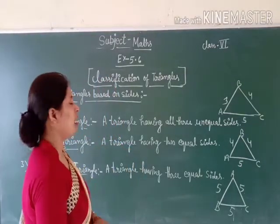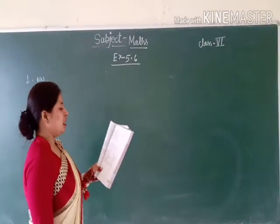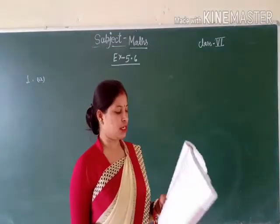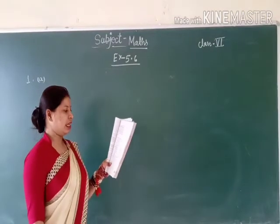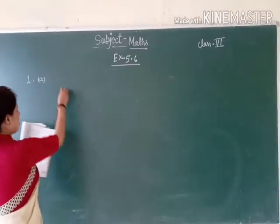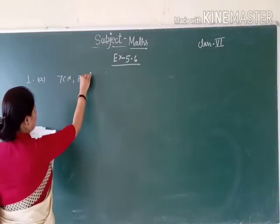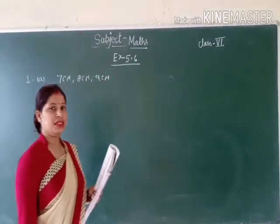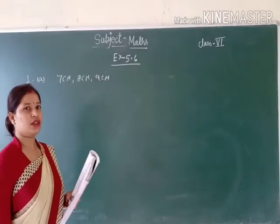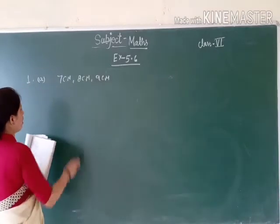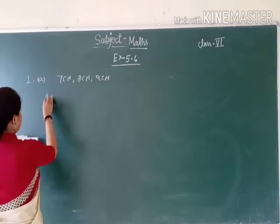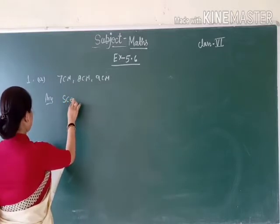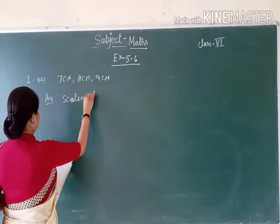So now let's start the exercise. First question: name the type of the following triangles based on their sides. First question — a triangle with side lengths 7 cm, 8 cm, and 9 cm. The three sides are different, meaning unequal sides. When all sides are unequal, which triangle is it? Scalene triangle. Very good — so this triangle is a scalene triangle.